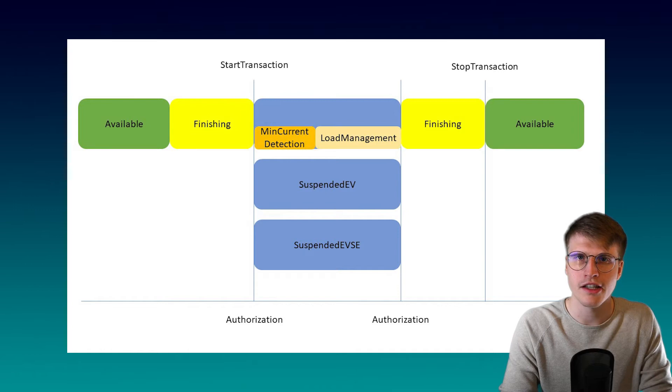In the charging state the min-current detection starts automatically and determines the minimum current the car needs to charge. We will later see exactly how it is done. Once the min-current detection is complete, the load management starts to work with the car and determines how much electric power is available. Now that we know where the two functions take place, I will go into more detail about the individual functions.